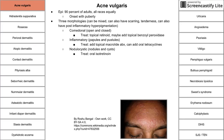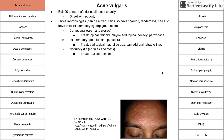You treat comedonal acne vulgaris with topical retinoids, and you might also add a topical benzoyl peroxide. The second morphology is inflammatory acne, which has papules and pustules on the skin. You can treat inflammatory acne with topical macrolide antibiotics, and you can also add an oral tetracycline antibiotic for severe cases.